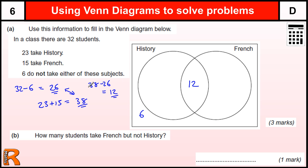So we've got 12 in the overlap. And that tells us then that we're going to have 23 take away 12 in this section of the History. So that's going to be 11. And then in French, we're going to just have the 3 because 12 plus 3 is 15.